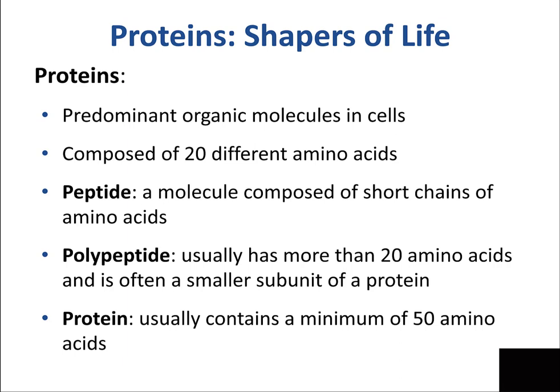Proteins predominate as organic molecules in cells and are composed of 20 different amino acids. All of life uses these same 20 amino acids — like 20 keys on a keyboard from which all concertos of life are composed. It's the arrangement and sequence that makes life unique. A peptide is a molecule composed of short chains of amino acids. A polypeptide usually has more than 20 amino acids and is often a smaller subunit of a protein.